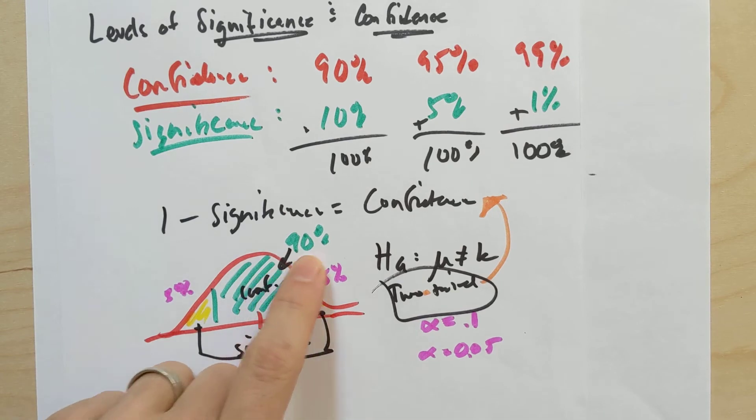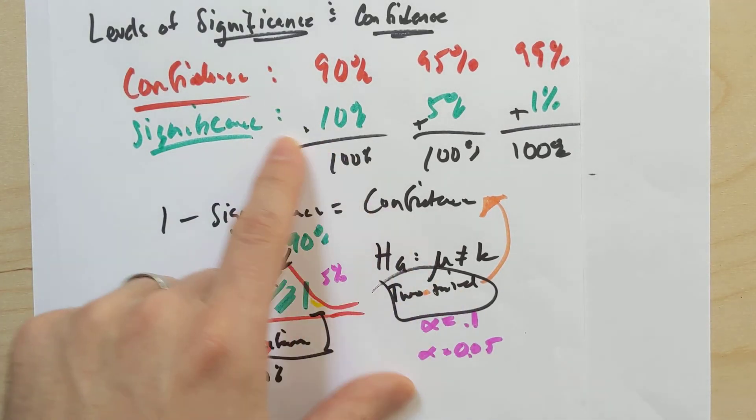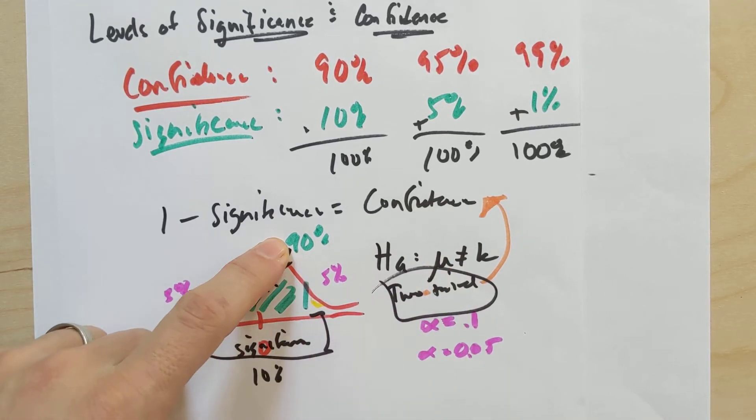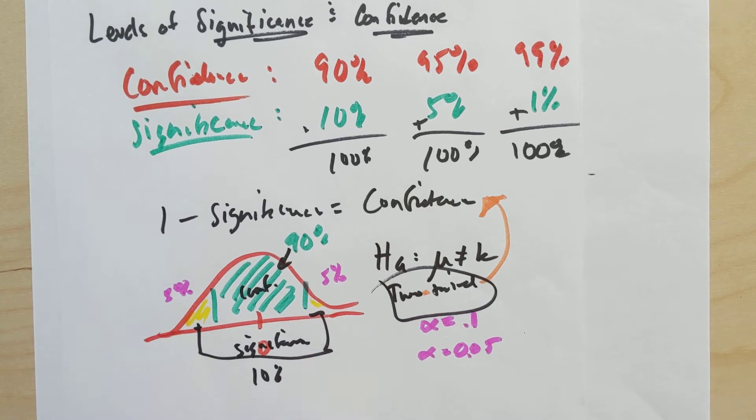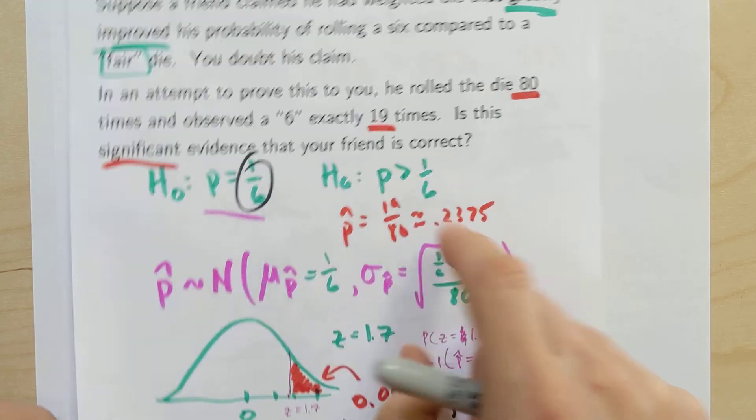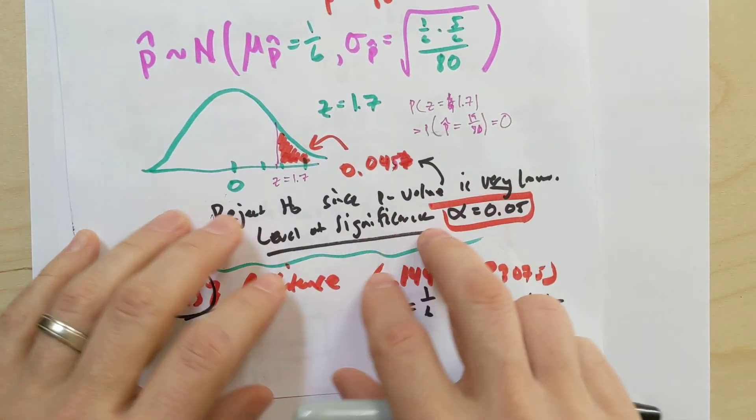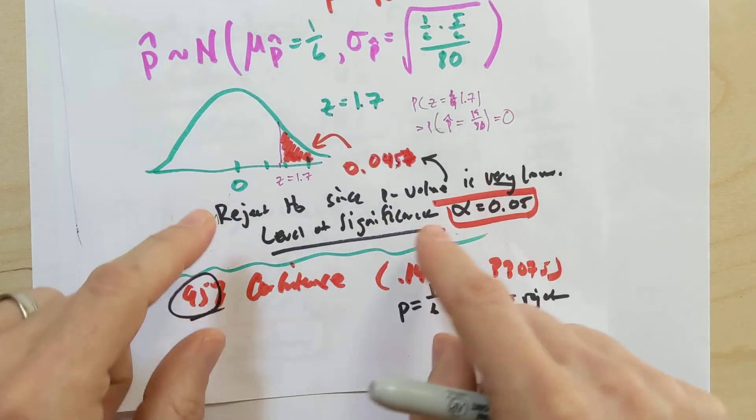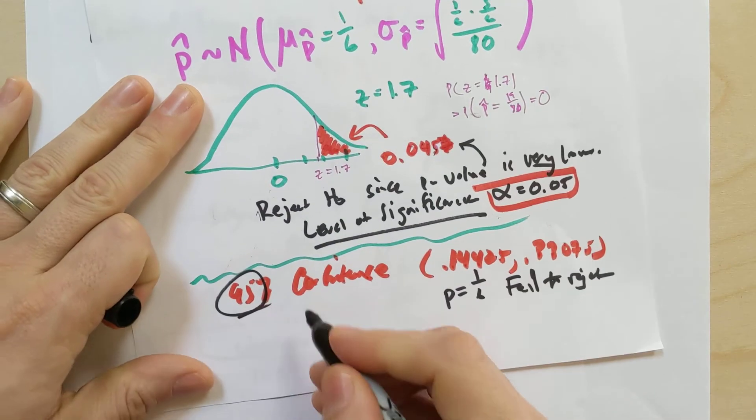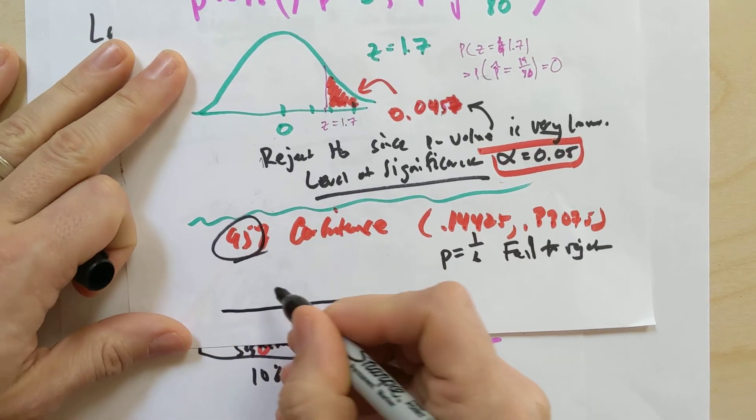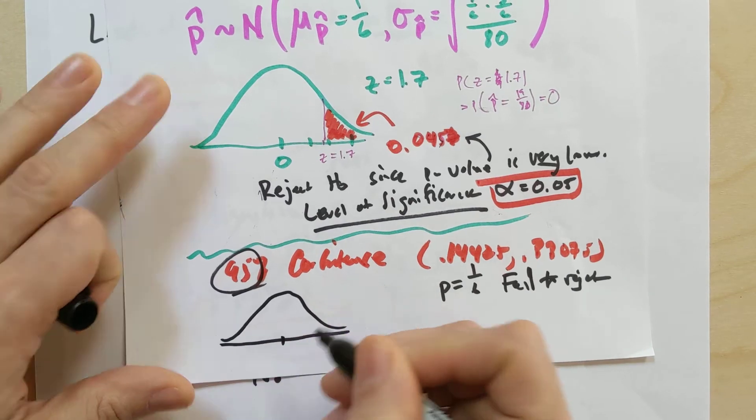I said that the confidence interval will be consistent with the level of significance when it's a two-tailed test. At a two-tailed test, a 90% confidence interval should give us the same result as a 10% level of significance. Was this a two-tailed test? It was not. Remember, we had P was greater than one sixth. And so in order for us to see why we made one decision here and a different decision here, we need to realize that actually when we had a 95% confidence interval, our level of significance is not what we thought it was, right? You keep using that word. I do not think it means what you think it means, right?